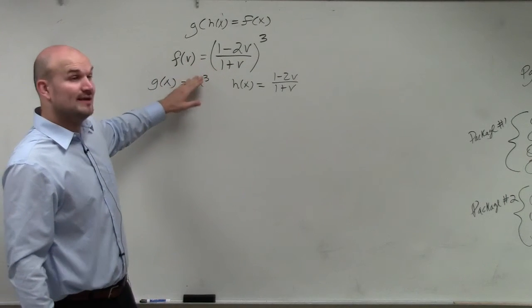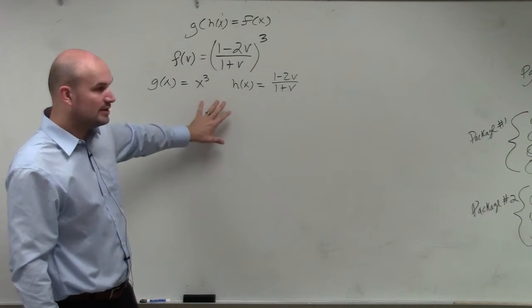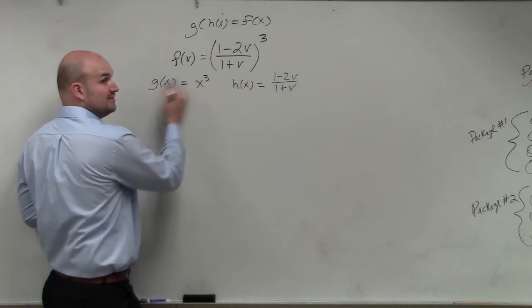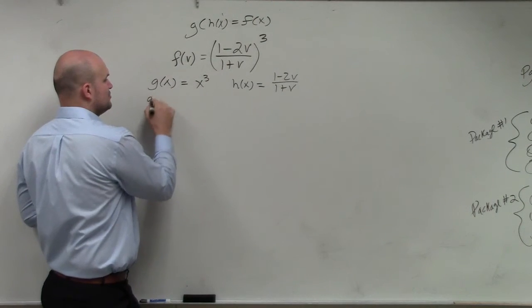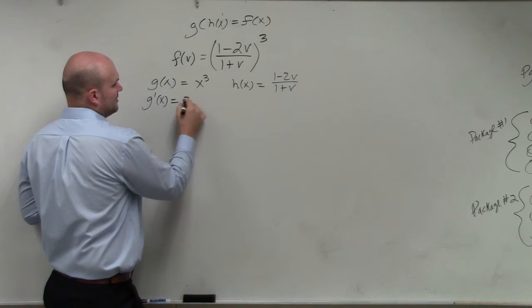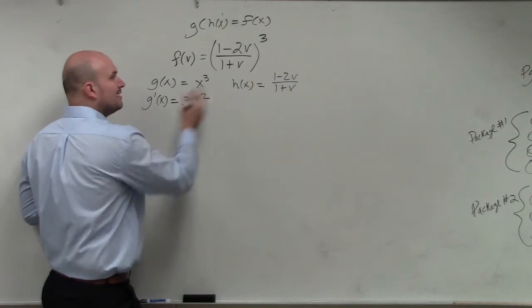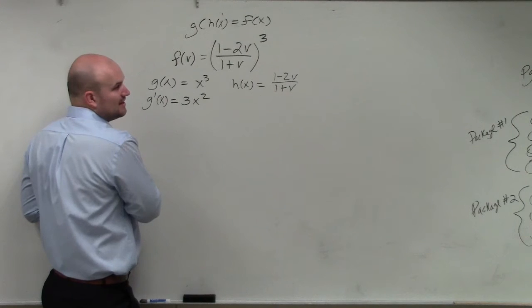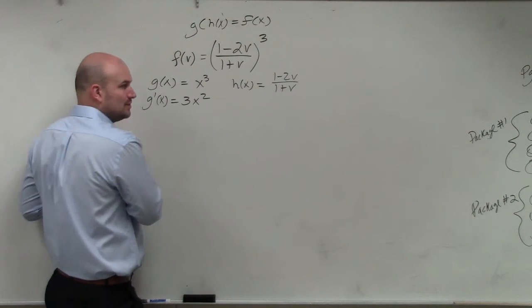And therefore, we know, OK, this is where we can move from. Again, remember the chain rule. We need to know the derivative of both of these. So g prime is fairly basic. That's just the power rule. However, h prime, you realize that we now have to do the quotient rule. Right?